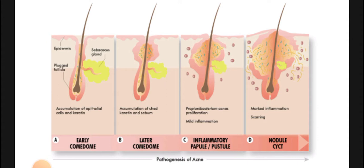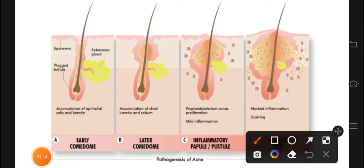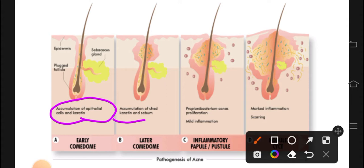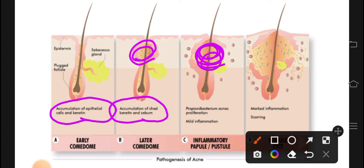The sebaceous glands will be closed — blocked on top. An important MCQ point is which bacteria is involved in acne. That bacteria is Propionibacterium acnes. This bacteria will proliferate.